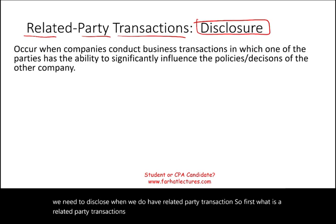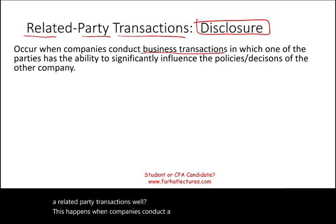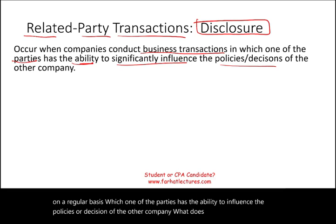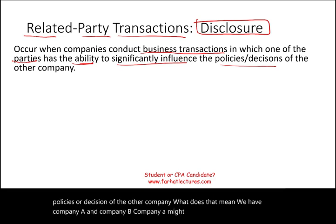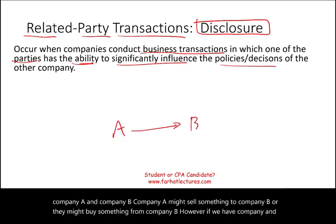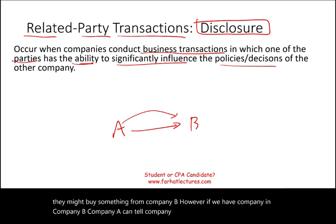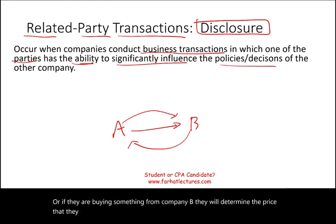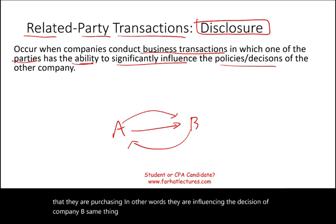Related party transactions happen when companies conduct a business transaction — which happens on a regular basis — in which one of the parties has the ability to influence the policies or decisions of the other company. For example, we have Company A and Company B. Company A might sell something to Company B or buy something from them. However, Company A can tell Company B how much to pay for the product, or determine the price they are purchasing. In other words, they are influencing the decisions of Company B — the same applies to borrowing or lending money between them.